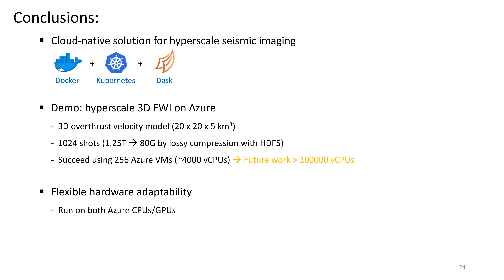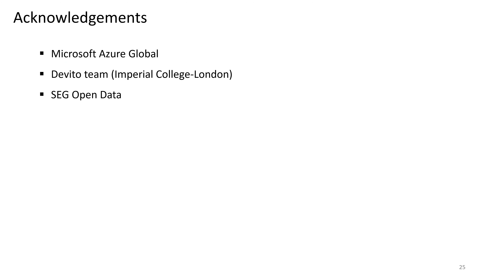To conclude, we have demonstrated a cloud-native solution for hyperscale seismic imaging. We are able to run 20 by 20 kilometer 3D FWI on Azure, and the seismic imaging Python code runs on both Azure CPUs and GPUs. This is an ongoing project — our current experiment is limited by time and budget, and the next step is to scale to more than 100,000 cores. We acknowledge Microsoft Azure Global, the DeVito team, and SEG Open Data. We would like to share and collaborate with our customers — please reach out if you are interested.